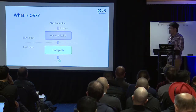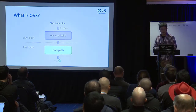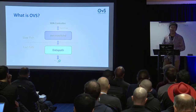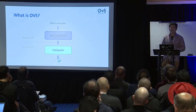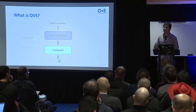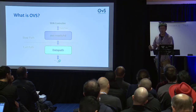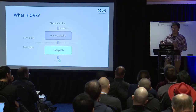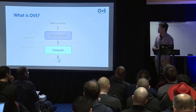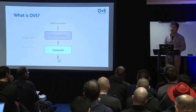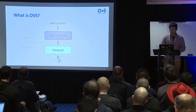Today OVS consists of two components: a slow path called OVS vSwitchD and a fast path called the data path. When the first packet arrives, it always goes to the slow path, which handles complicated OpenFlow tables and many match fields and action types. After the slow path processes everything, it installs a single flow into the fast-path data path, so subsequent packets hit the fast path with much better performance.